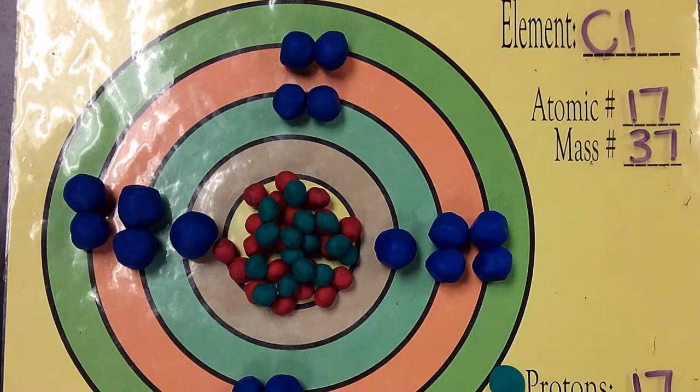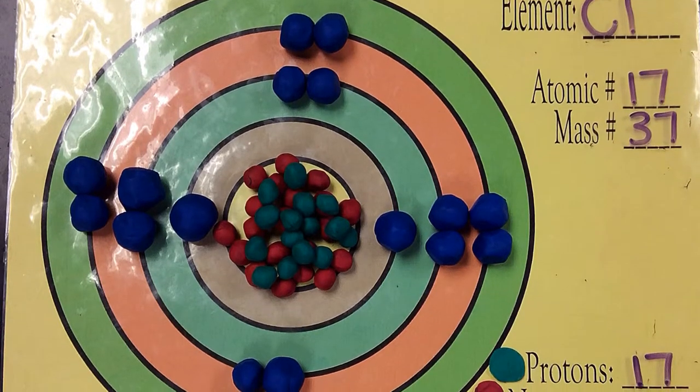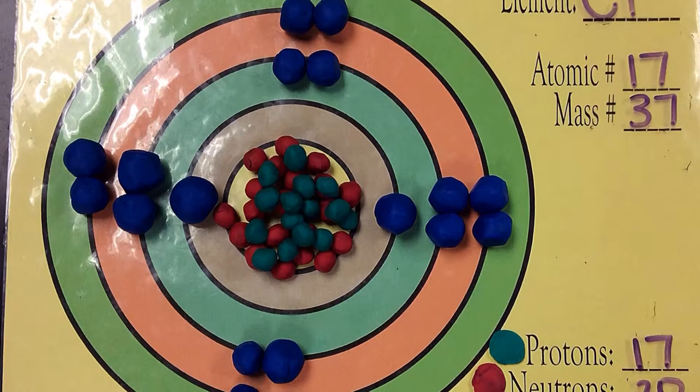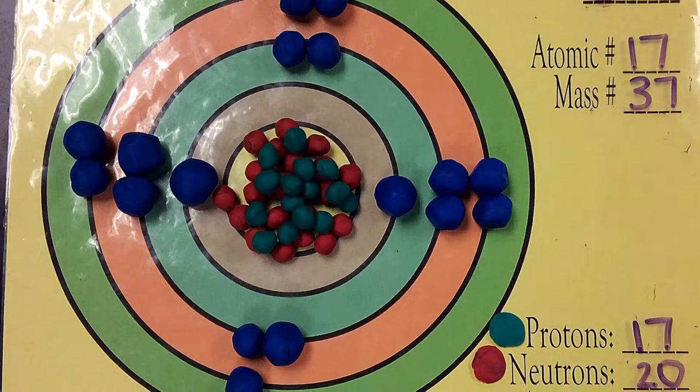Chlorine, which can be represented by Cl, has an atomic number of 17, a mass of 35.45, electronegativity of 3.2, and at room temperature is a gas.